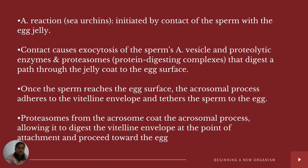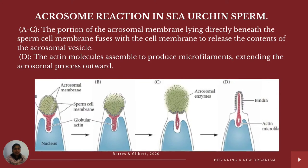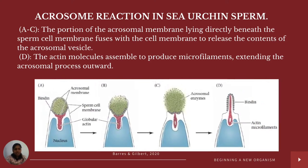The acrosomal reaction in sea urchins is initiated by contact of the sperm with the egg jelly, which causes exocytosis of the sperm's acrosomal vesicle, releasing proteolytic enzymes and proteasomes — protein-digesting complexes that digest a path through the egg jelly to the egg surface. Once the sperm reaches the egg surface, the acrosomal process adheres to the vitelline envelope and proteasomes from the acrosome core allow it to digest through the vitelline envelope at the point of attachment. The portion of the acrosome membrane just beneath the sperm cell membrane fuses with the cell membrane to release the contents of the acrosomal vesicles.